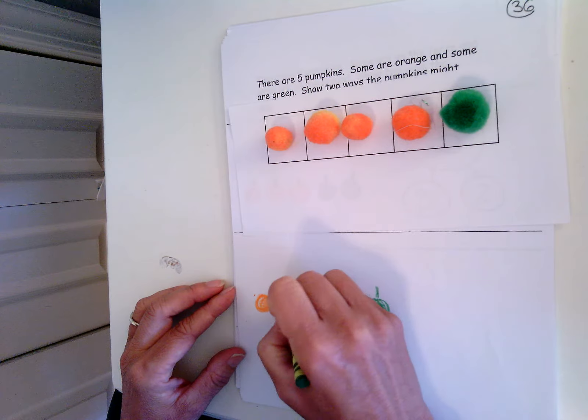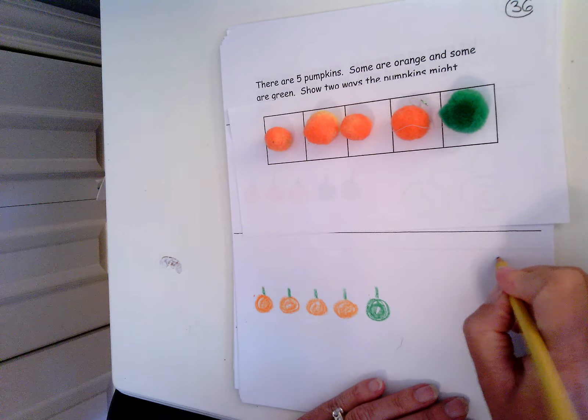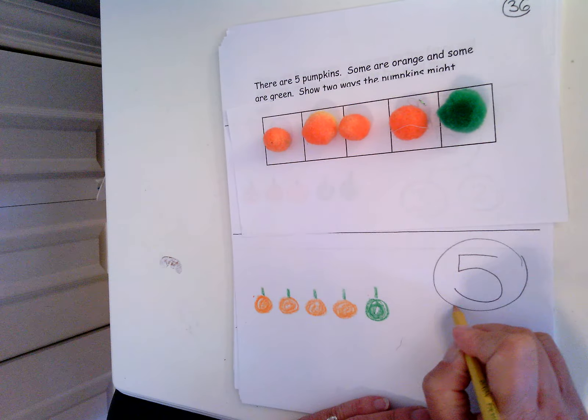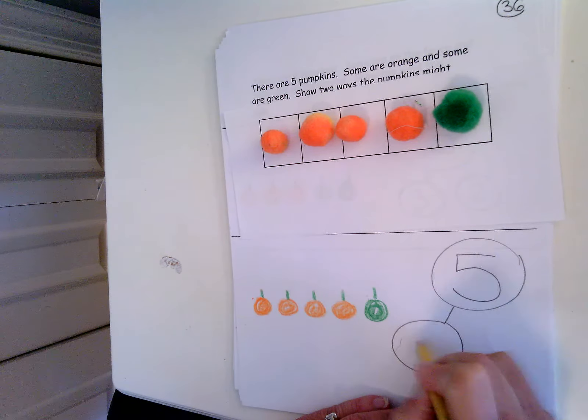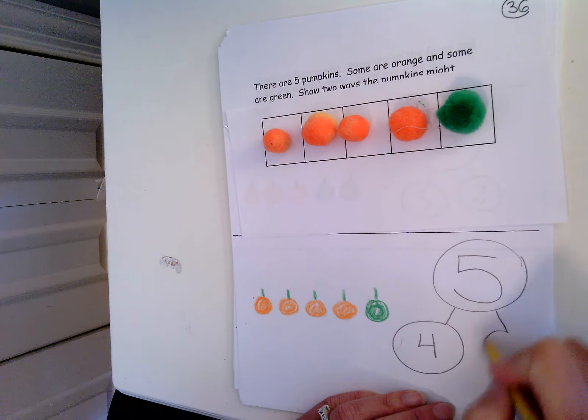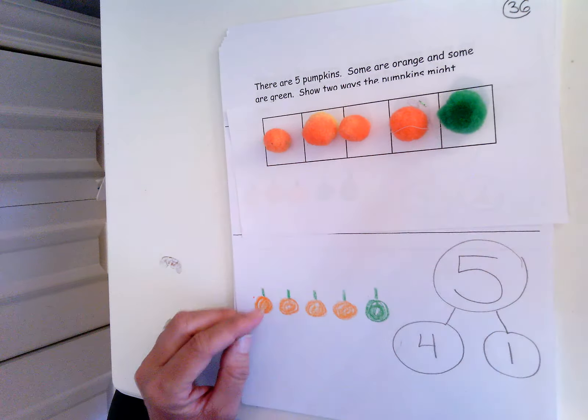So five is my whole number. That's how many pumpkins I had in all. And part are orange. And part are green. Four and one make five. Three and two make five.